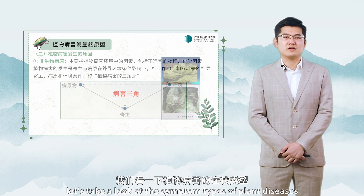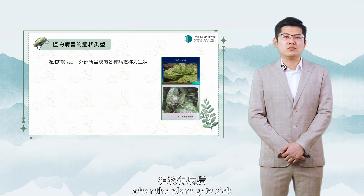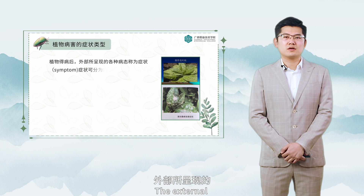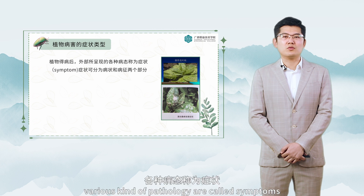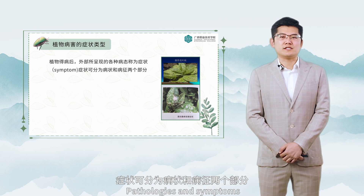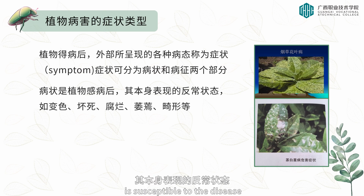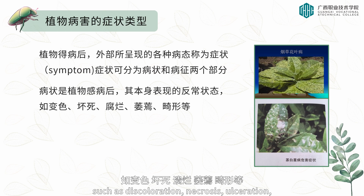Finally, let's take a look at the symptom types of plant diseases. After the plant gets sick, the various external kinds of pathology are called symptoms, which can be divided into two parts: pathologies and symptoms. Pathology is the abnormal state of the plant itself after the plant is susceptible to disease, such as discoloration, necrosis, ulceration, wilting, deformity, and so on.